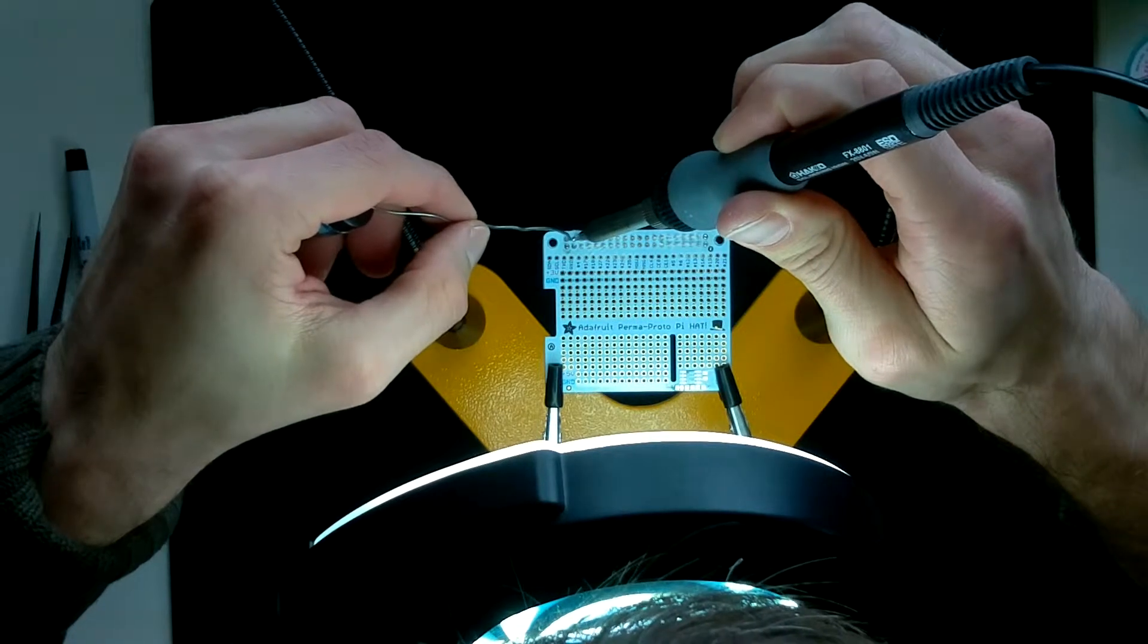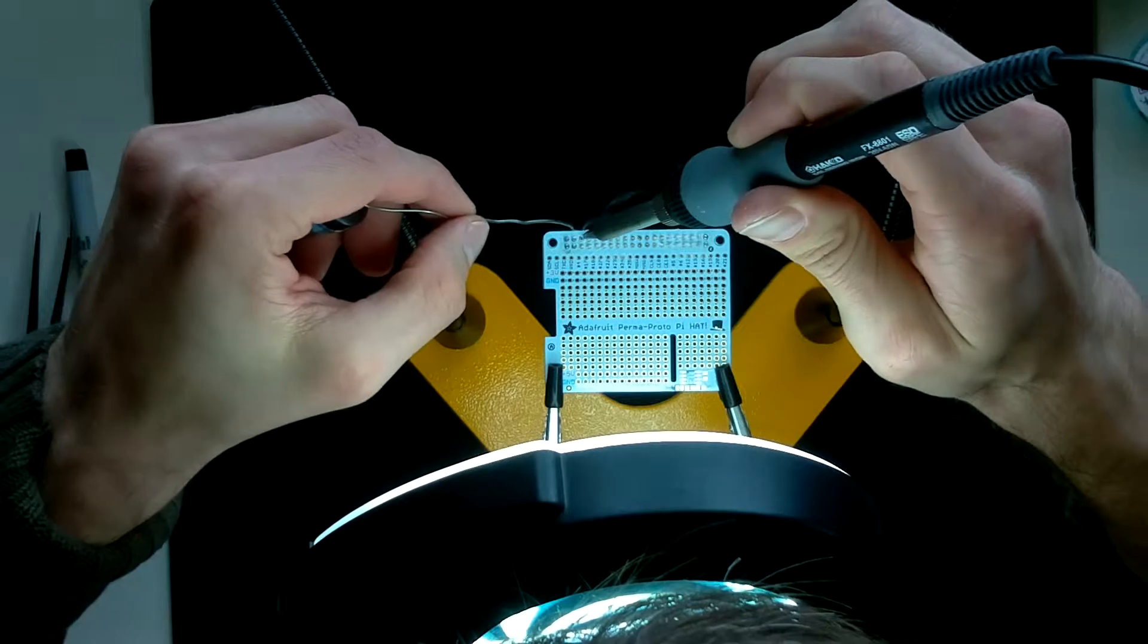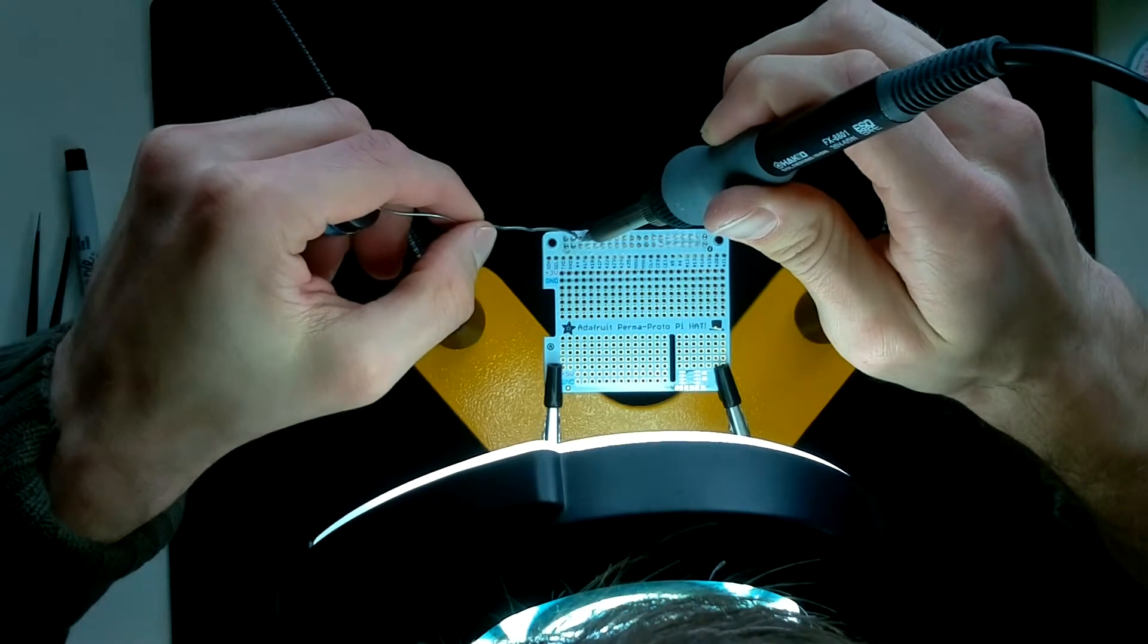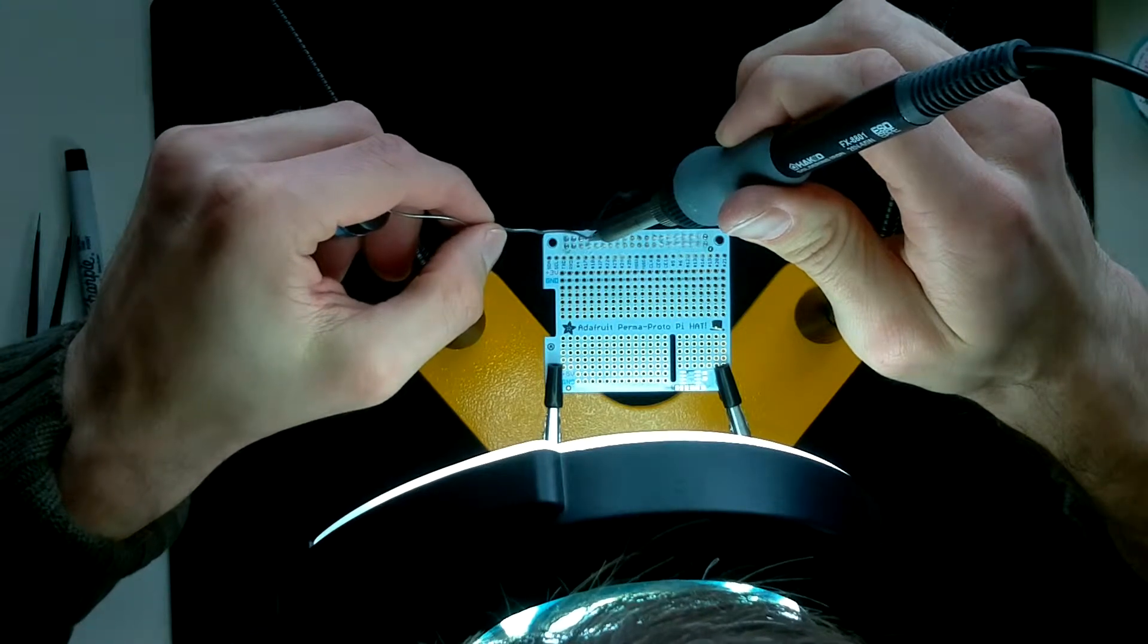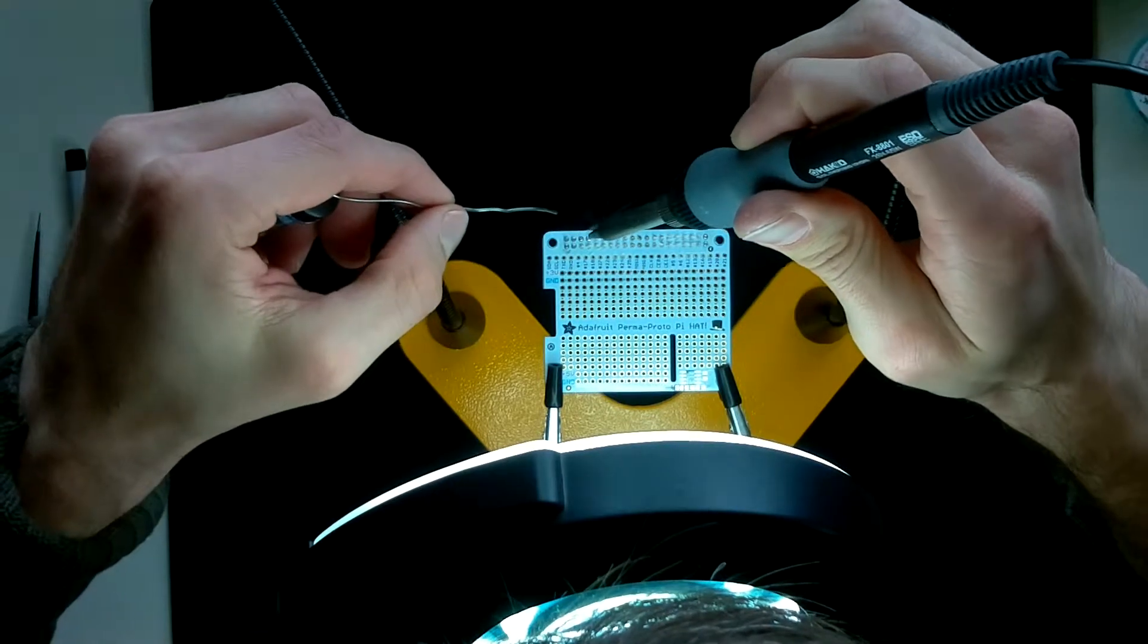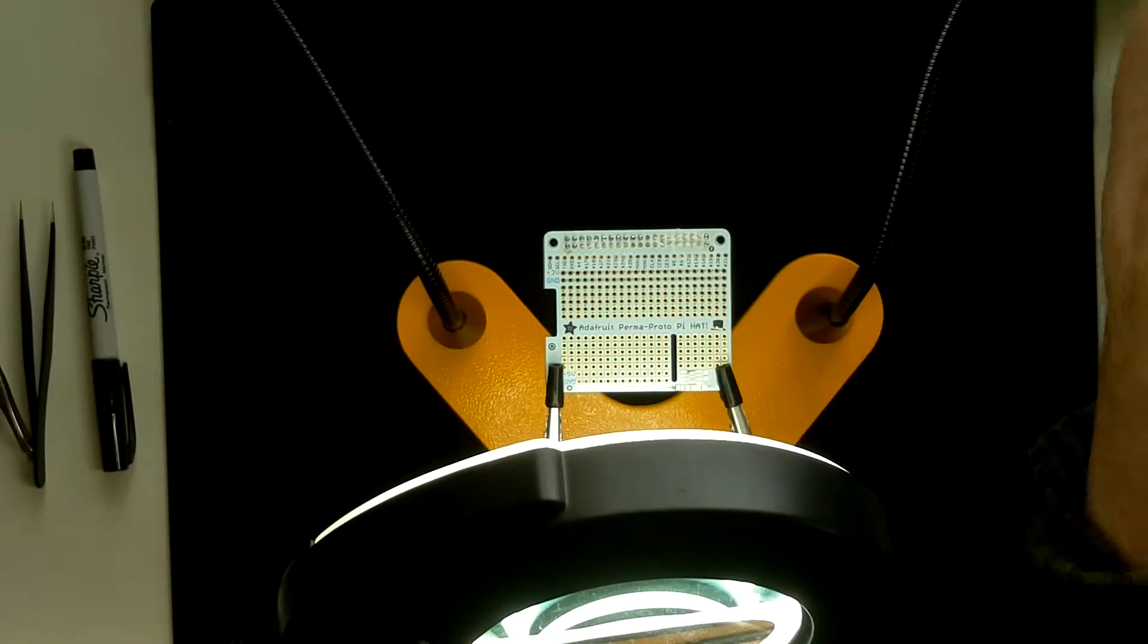Since this is a 40 pin header, what I want to do is tack it down by soldering in the four corners and then I'll make sure that the header is mounted nice and flush and it's looking correct.